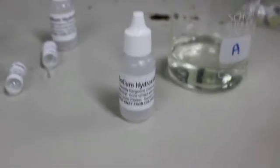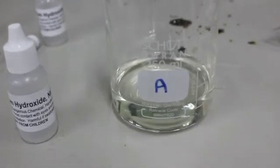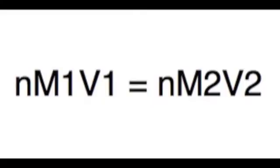In our experiment, the titrant was a known concentration of NaOH. There was an unknown concentration of HCl. This is the general equation for titrations: nM1V1 equals nM2V2.